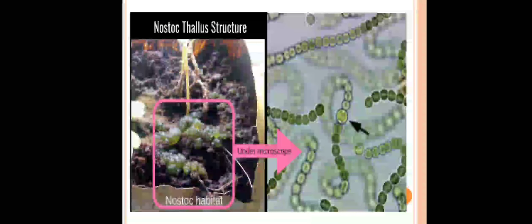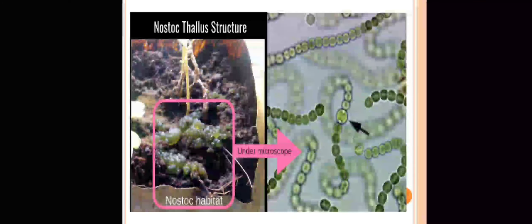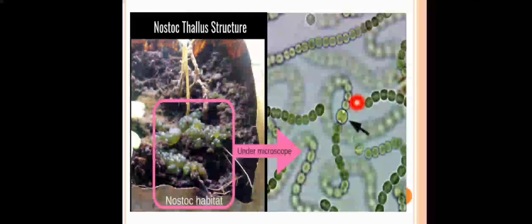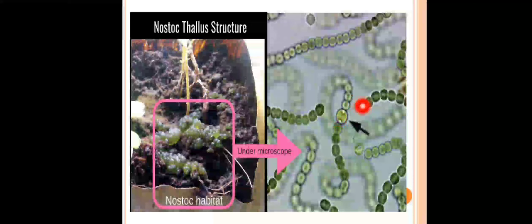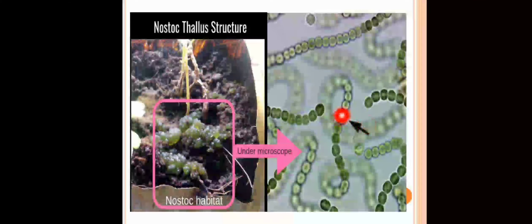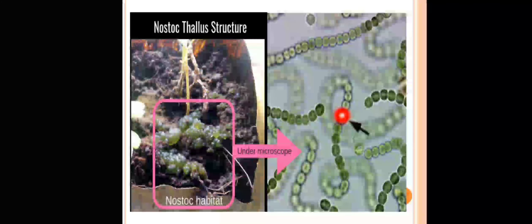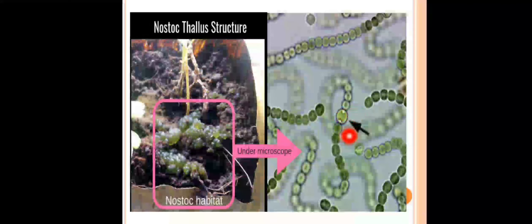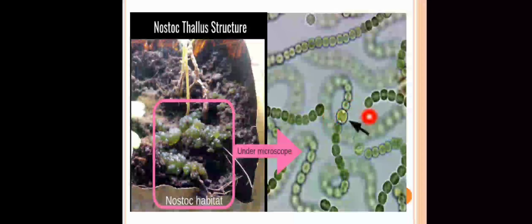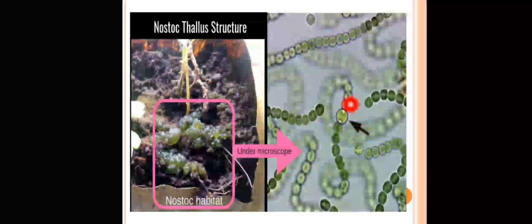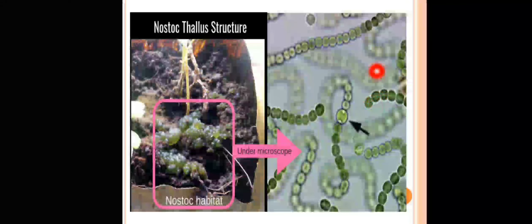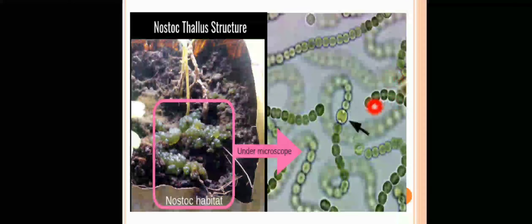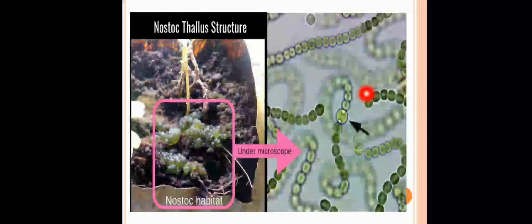The thallus structure of Nostoc has three types of cells: vegetative cells, akinete cells, and heterocyst cells. Vegetative cells perform photosynthesis; heterocyst cells are important for nitrogen fixation; and akinete cells are thick-walled cells.